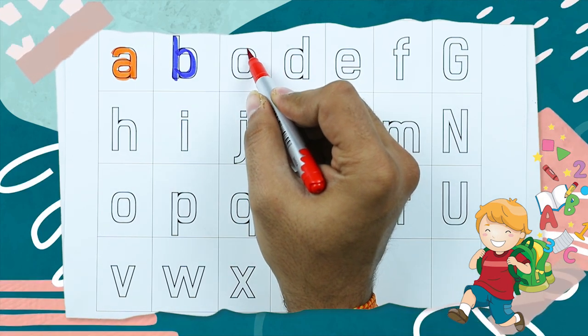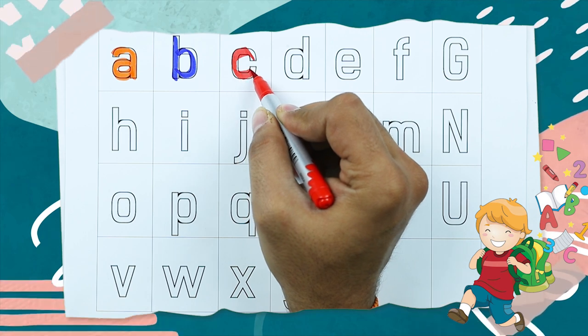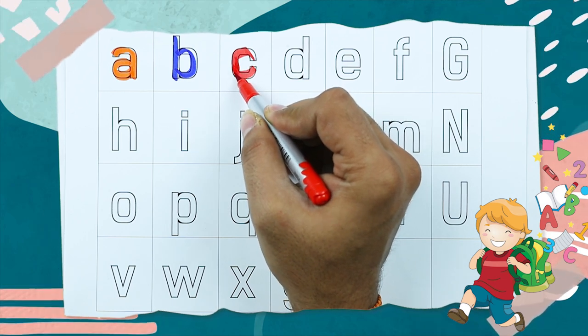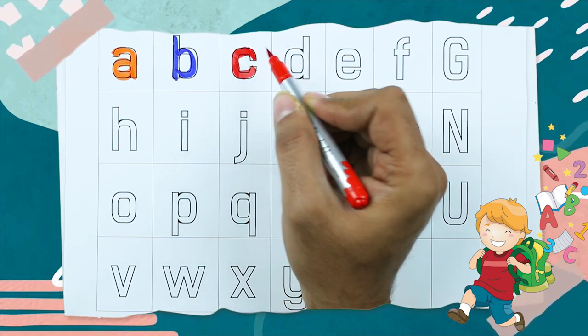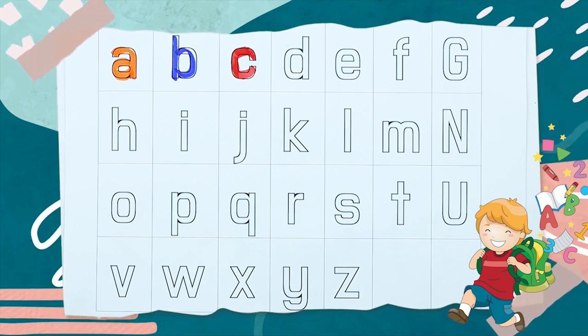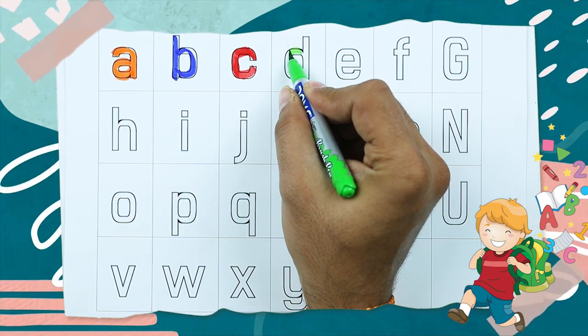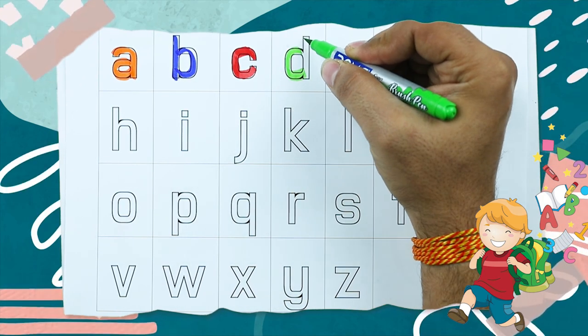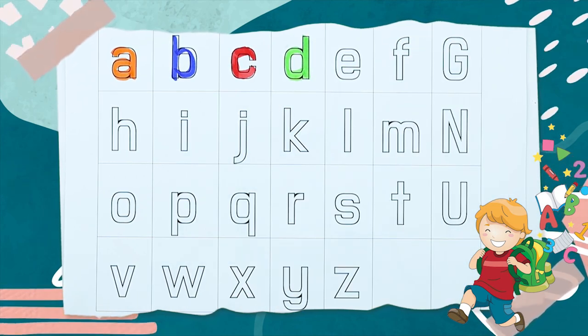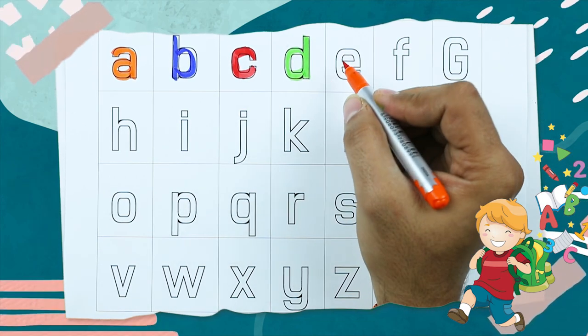C for cat, it's small c. C for cat. D, D for dog, like it's D. D for dog.